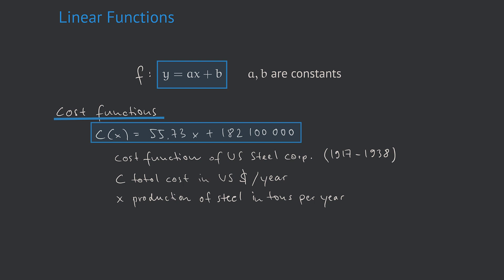The interpretation of the slope 55.73 is that if the production is increased by one ton per year, the costs will increase by 55.73 dollars per year. The y-intercept of about 180 million can be interpreted as the fixed costs, because in the extreme case where x equals zero, I still have these costs without even producing one single ton of steel.